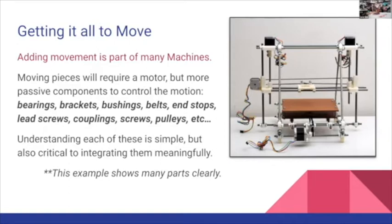Looking at couplers — the double screws indicate one is on the shaft of the motor and one is on some sort of screw — those would move the entire gantry up and down across the machine. Then at the bottom there's a belt that probably takes the entire MDF platform forward and back. Just by looking at how things are mechanically connected, you can start to imagine what each motor is responsible for, and then use those features for your own designs.